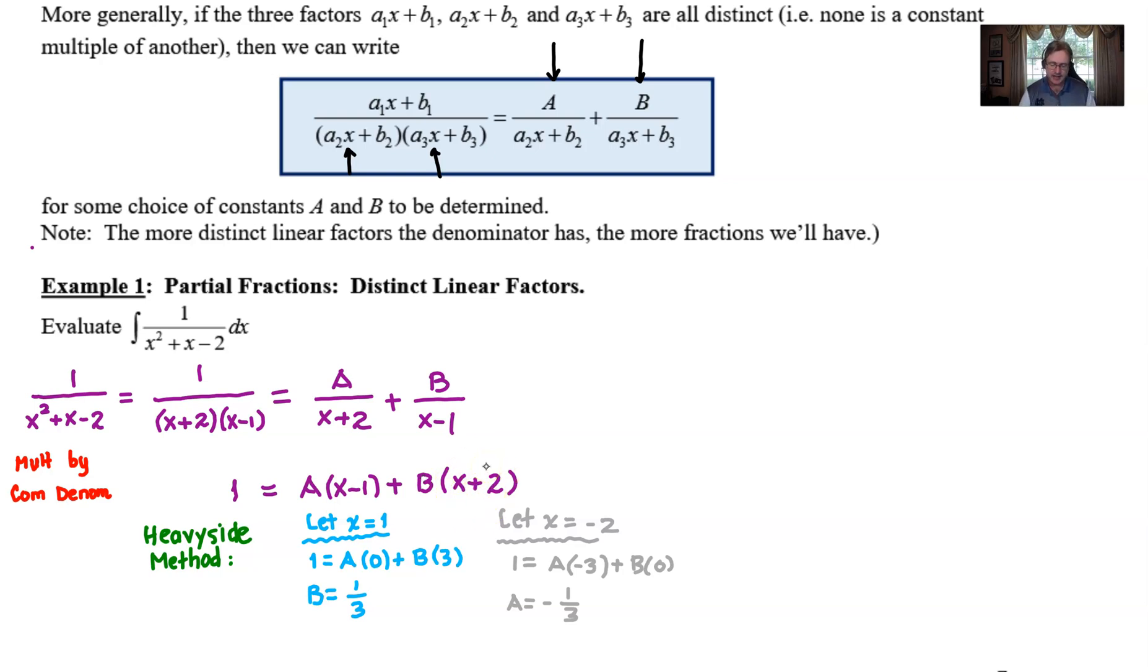It would not have had to have been -2, because once you know B you could use it throughout the rest of the solution. But it's certainly a lot quicker to use -2 so that it wipes out that particular B value to find A. At that point, the algebra is over and now the calculus can begin again. For the calculus, we're going to rewrite this integral, the problem that we're trying to solve: the integration of 1 over (x²+x-2) with respect to x.